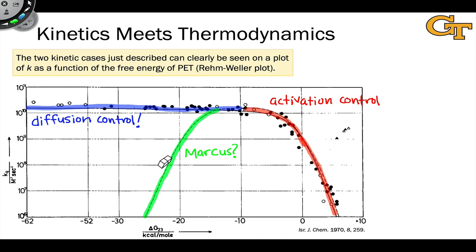What this dotted line predicts is that as the PET process becomes more energetically favorable, with a more negative delta G, the rate of electron transfer actually decreases.